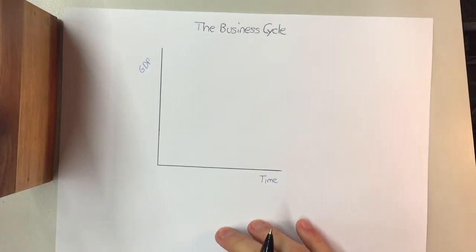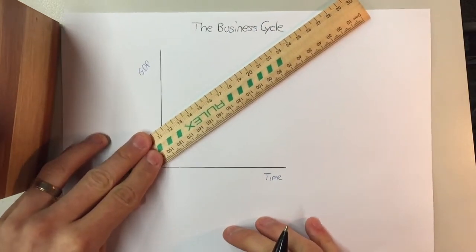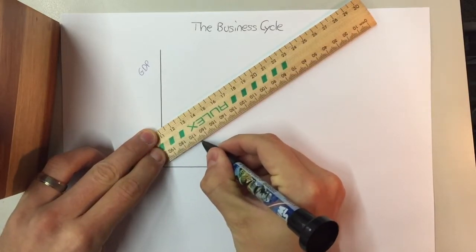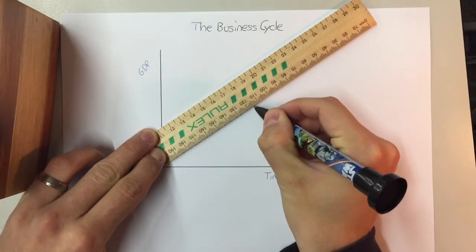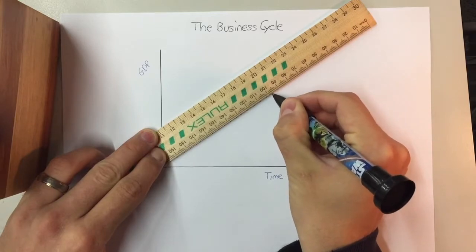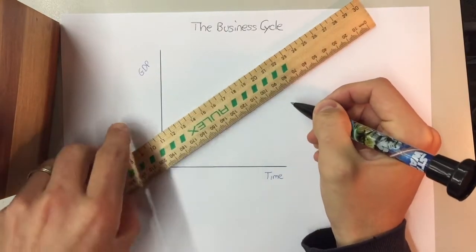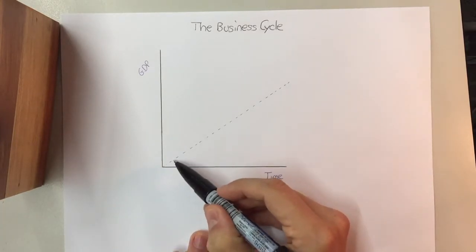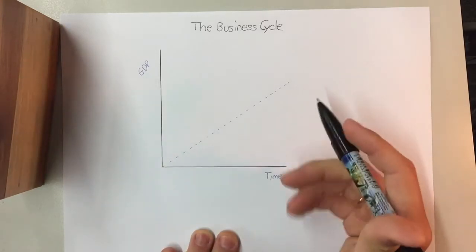Now with the business cycle, there is always a long-term line that's steadily increasing and it usually gets drawn with dots. And this is a long-term trend of what our economy should be. It's called potential GDP. With the amount of resources that we have as a country, and the amount of labor and technology we have, this is the amount of output we should be creating over a period of time.